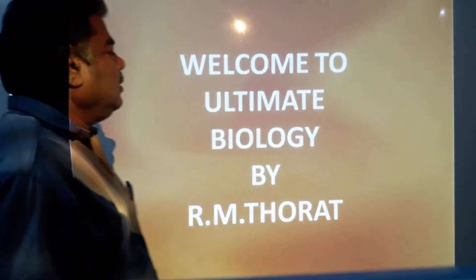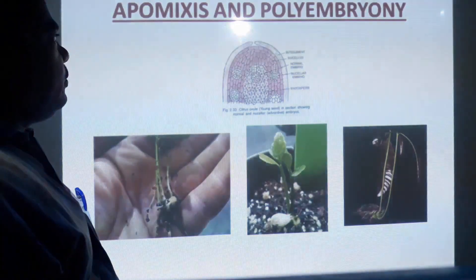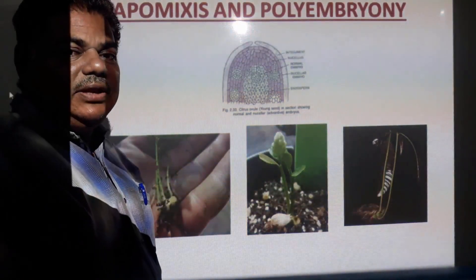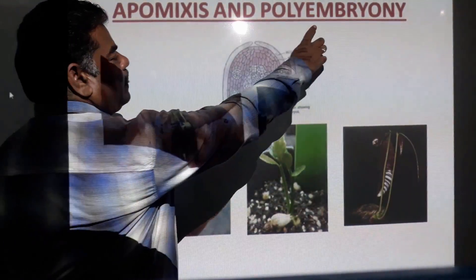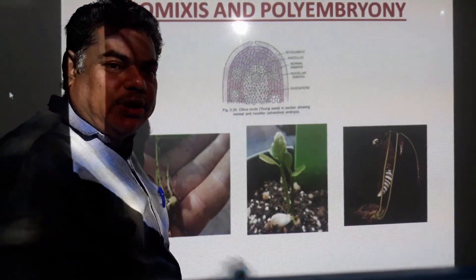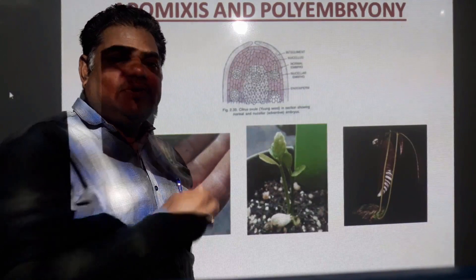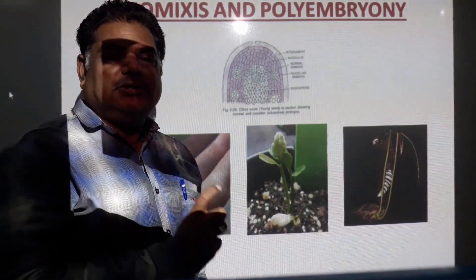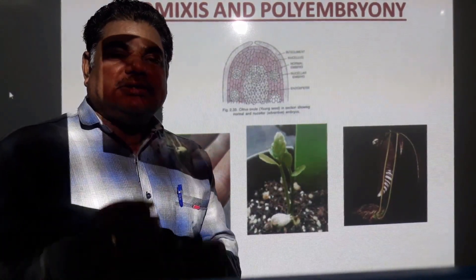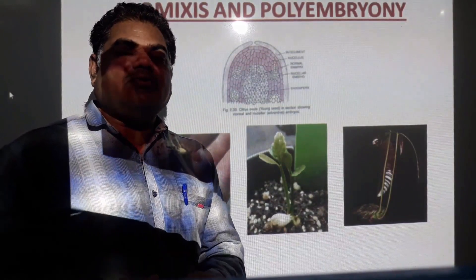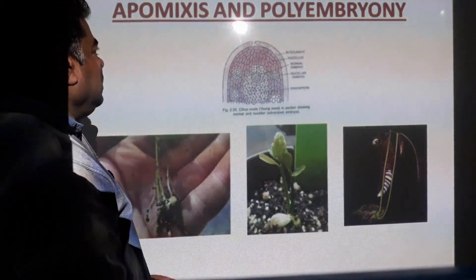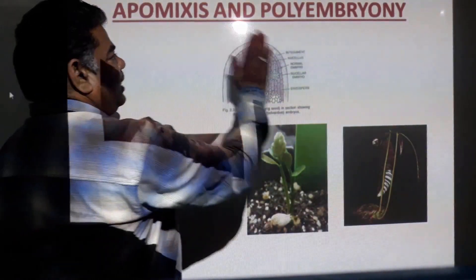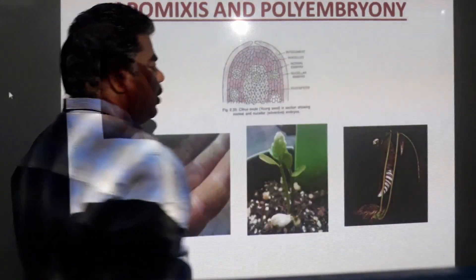Welcome to Ultimate Biology. Today we will learn about Apomyxis and Polyembryony. This is the last topic of this chapter on sexual reproduction in flowering plants.